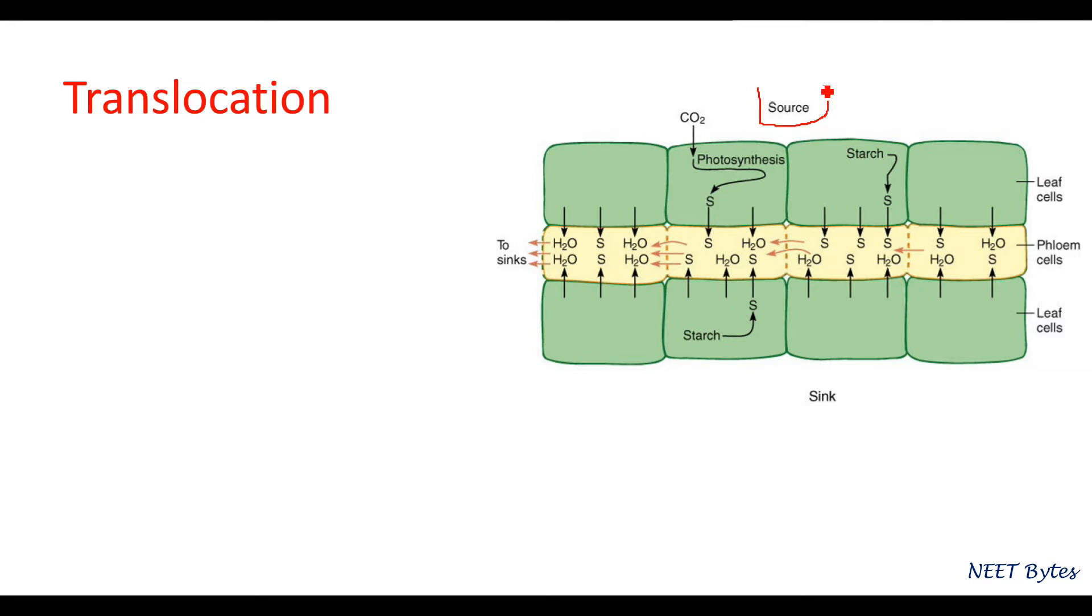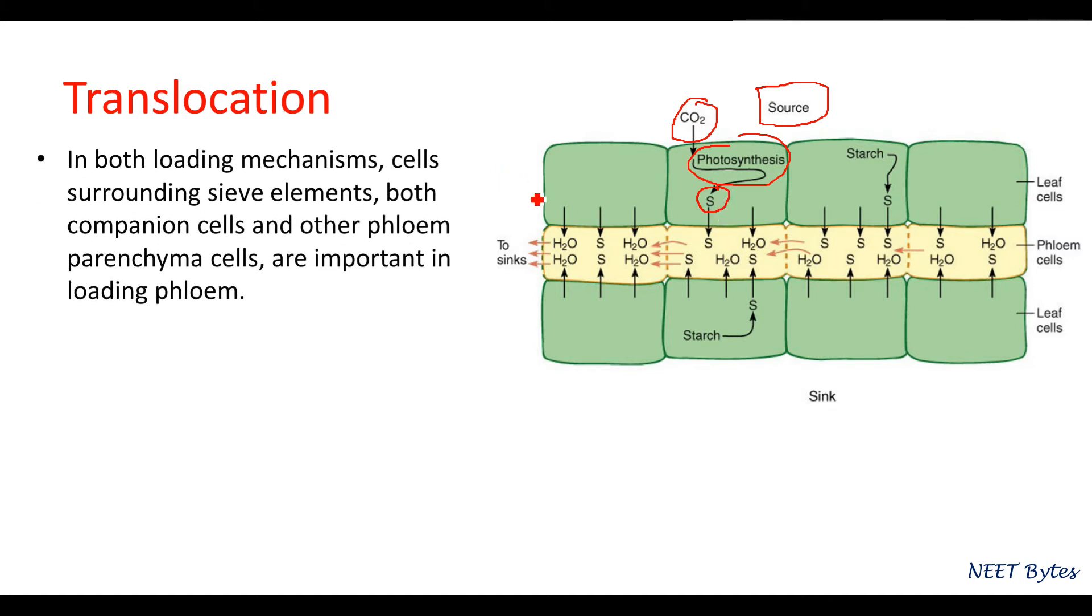Now have a look at this diagram. This diagram shows the source where photosynthesis happens. You can see this is the area where photosynthesis is happening and sugar is being converted into starch. Cells surrounding the sieve elements—both companion cells and phloem parenchyma cells—are important in loading. This is the sieve element surrounded by phloem parenchyma cells and companion cells.